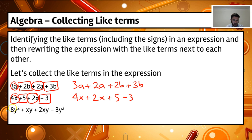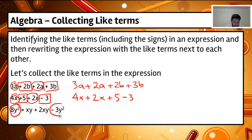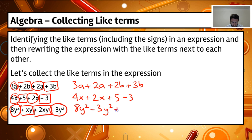The last expression: 8y squared plus xy plus 2xy minus 3y squared. If we look at the terms, we've got xy and xy — these two are like terms, they've got the same letters and same powers. And then we've got 8y squared and minus 3y squared. So I'll circle the y squared terms and the minus 3y squared, and then the plus xy and the plus 2xy. Rewriting those: 8y squared minus 3y squared plus xy plus 2xy.